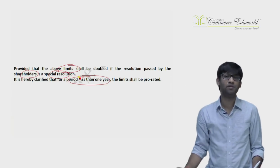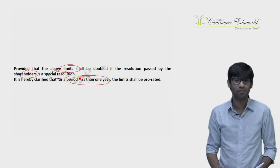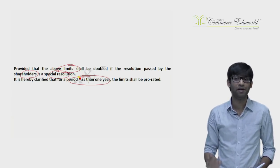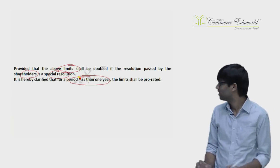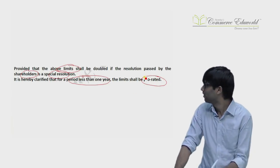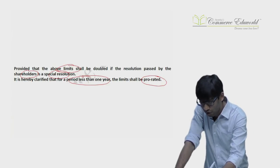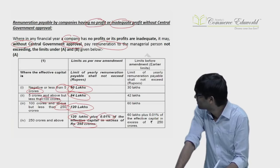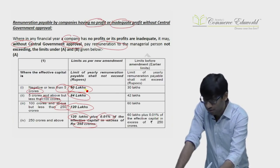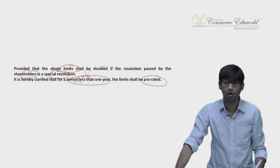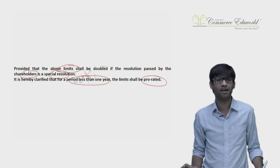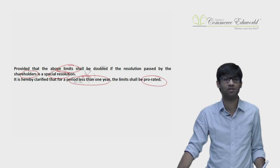If the period is less than one year — for example, if a company started in the middle of the year — then the maximum manager's remuneration is calculated on a pro-rata basis. For instance, if the first-slab limit is 60 lakhs for the entire year and a company is operating for only half the year, then the limit becomes 30 lakhs on a proportionate basis.